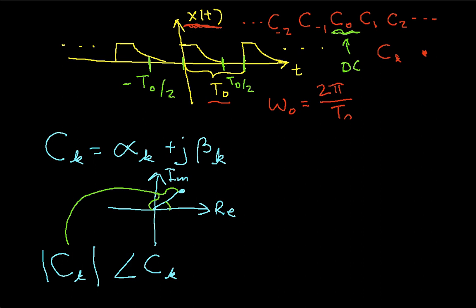And the angle of c sub k is the angle between, typically, the real axis and this line that I've drawn between c sub k and the origin. Sometimes you'll see these called rectangular, and this as polar or magnitude phase. And there are different advantages to each of these ways of representing the c sub k's.